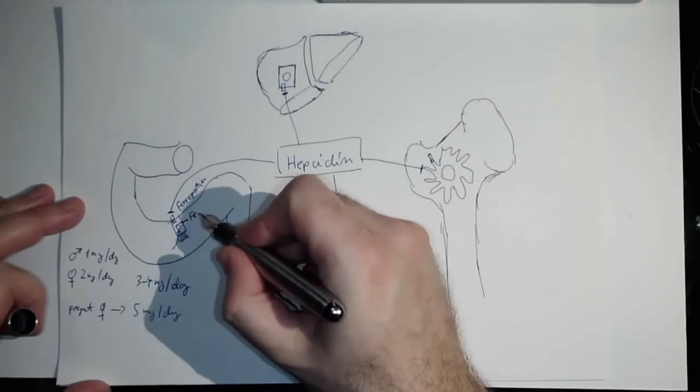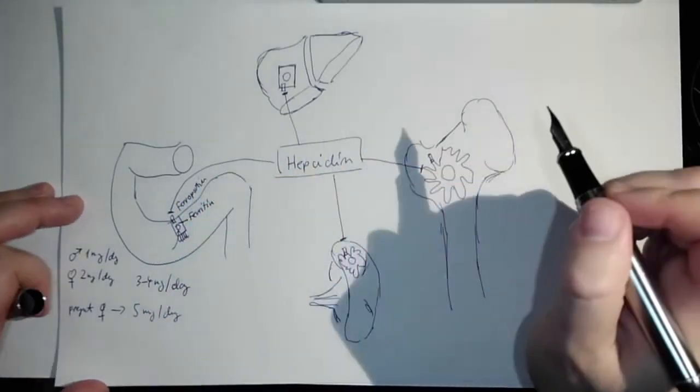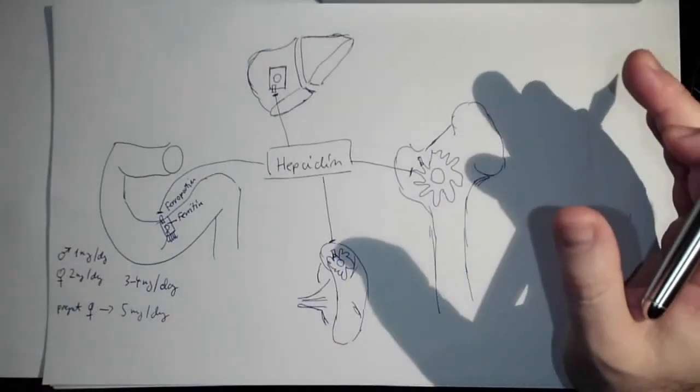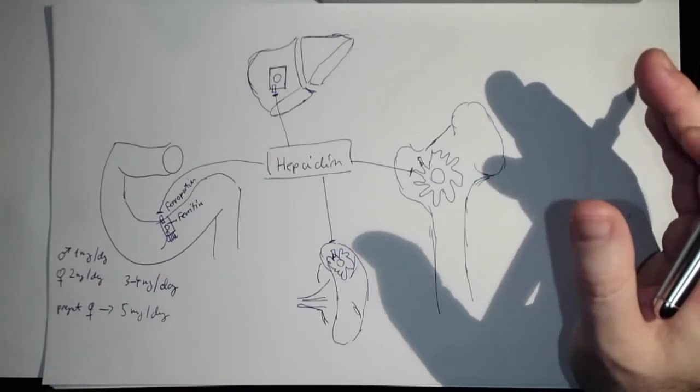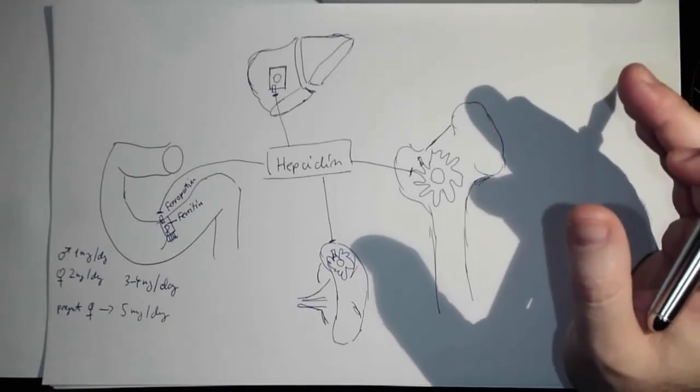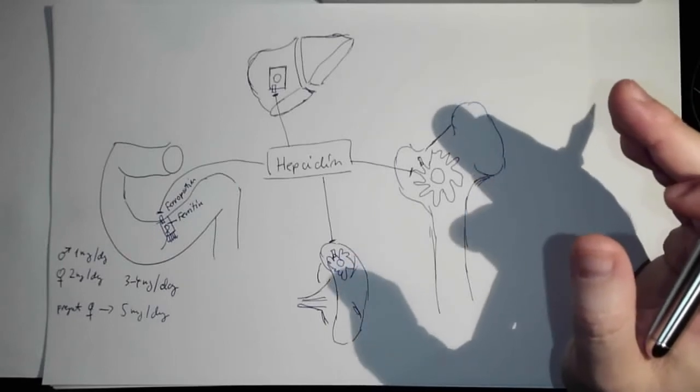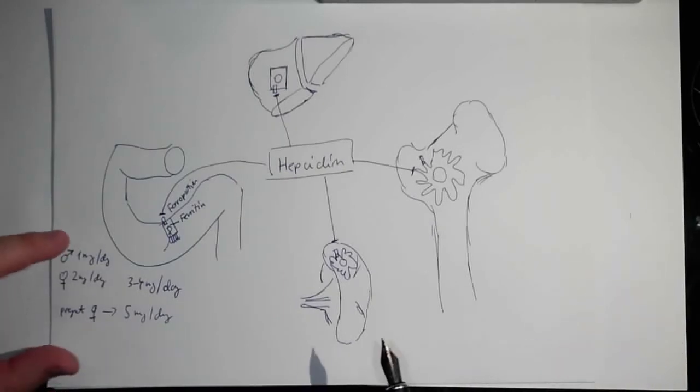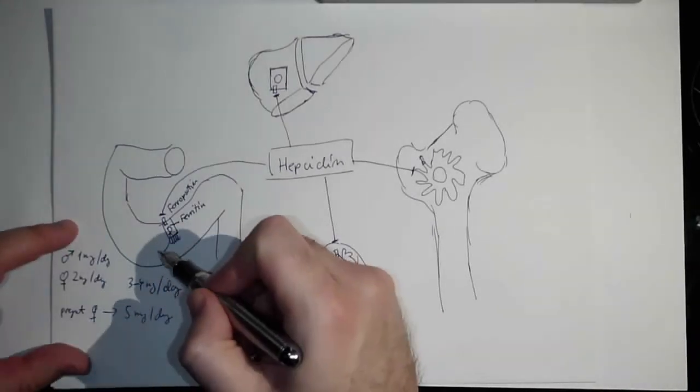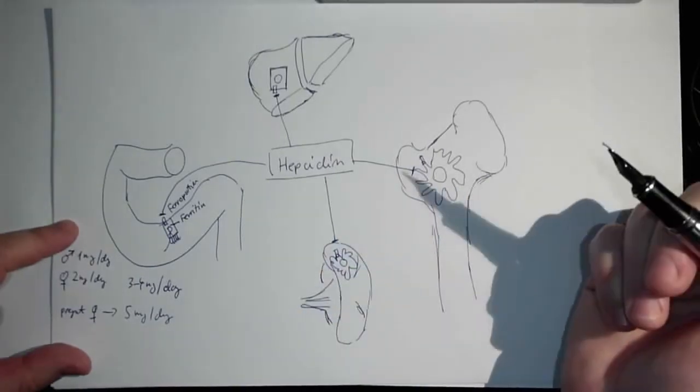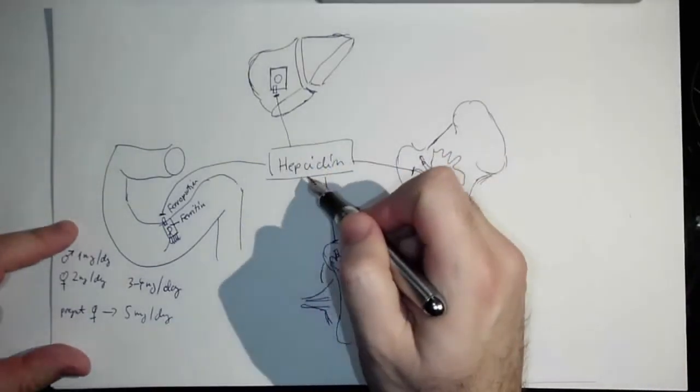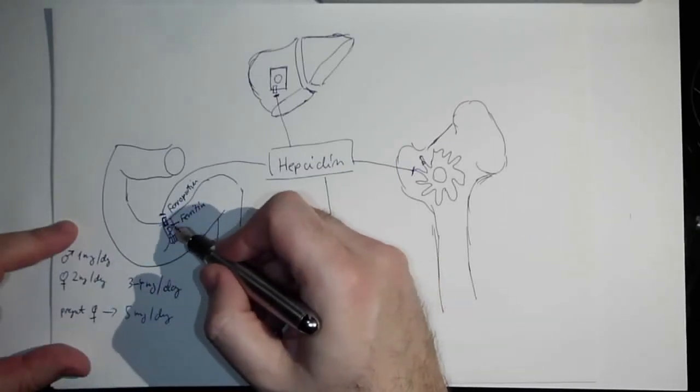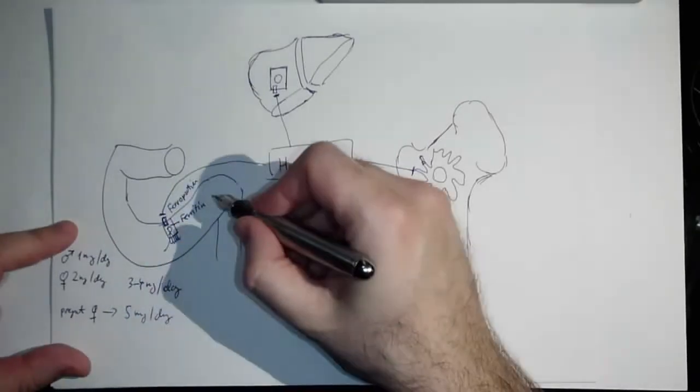Actually in the enterocytes, iron gets absorbed and it's fixed or stored with ferritin. Why? Because free iron would be toxic for the cell. So it's bound with ferritin and ferritin protects the cell against the toxicity of the iron. But if we don't have enough iron, hepcidin is low and that's why ferroportin will be open.